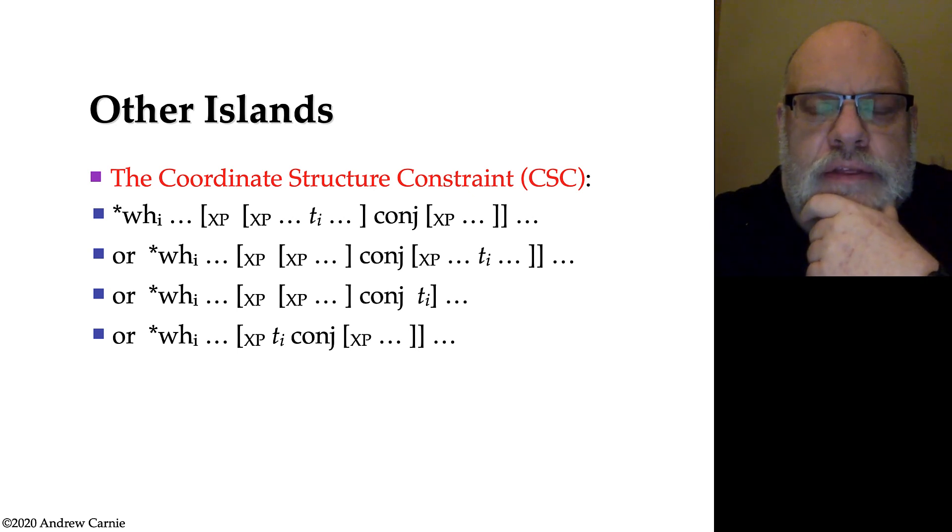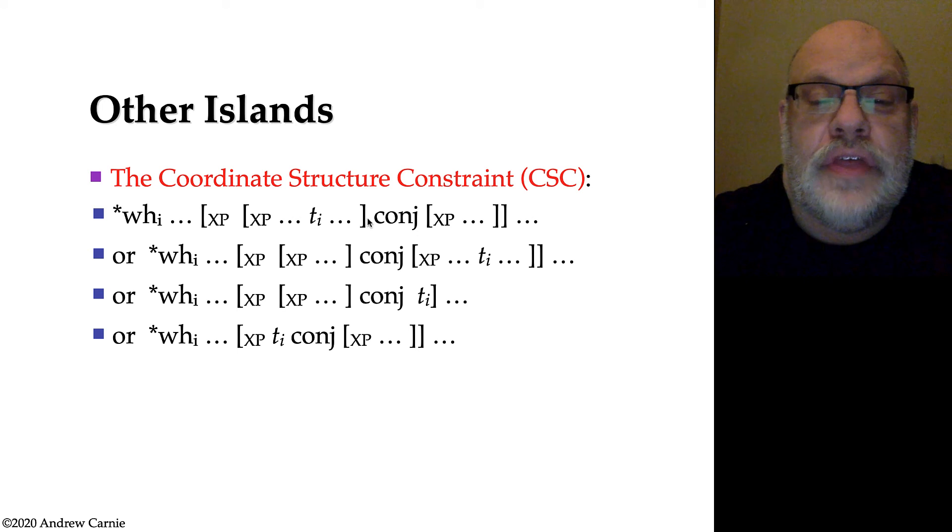Now the WH island constraint is quite complicated when you write it out in terms of variable categories. It looks like this and that's a bit of a horror show. And whenever you see a constraint like this, you have to ask yourself something's gone wrong because we should be able to state this in a more succinct way. But for our purposes, this will get at the basic facts. WH movement can't take either of the conjuncts or can't extract from within either of the conjuncts. So those are islands.